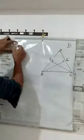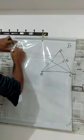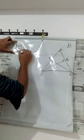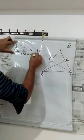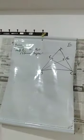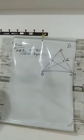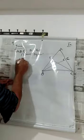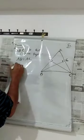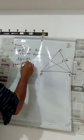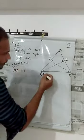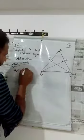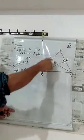We need to prove this. Given that ABC is an isosceles triangle, and the equal sides AB equal to AC. We need to show that BE equal to CF — that is, the two altitudes are equal.